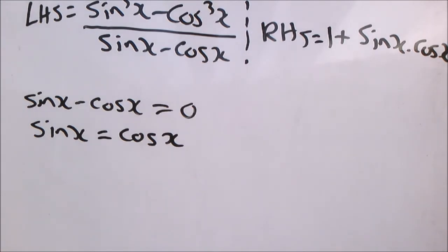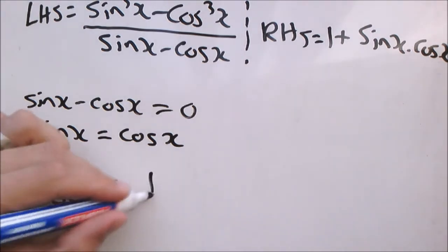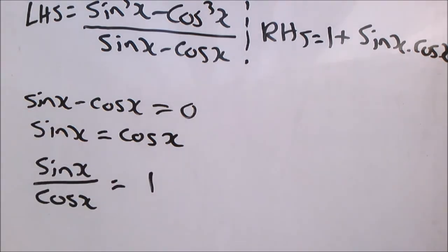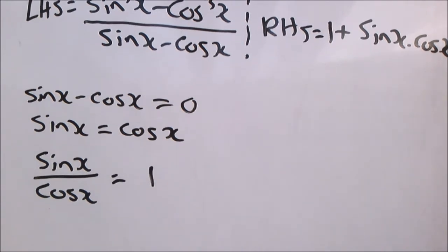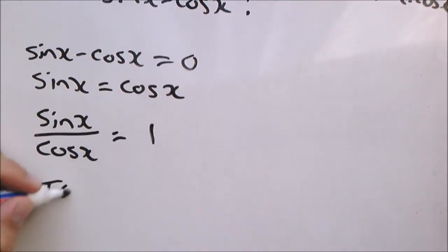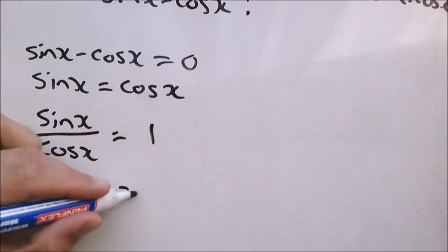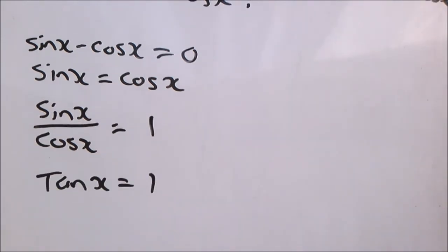Then we divide by cos x on both sides. And you will have sin x over cos x equals to 1. Which means this is where tan x is equal to 1 by using the quotient identity.